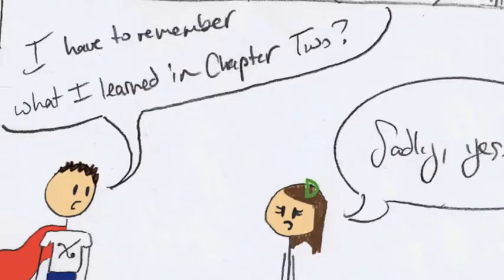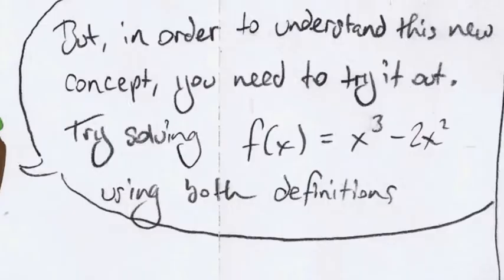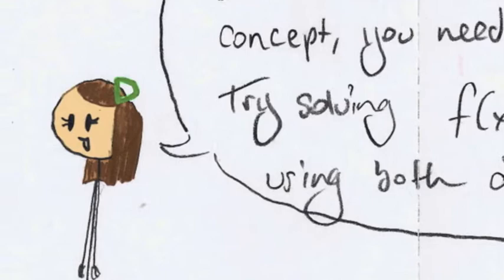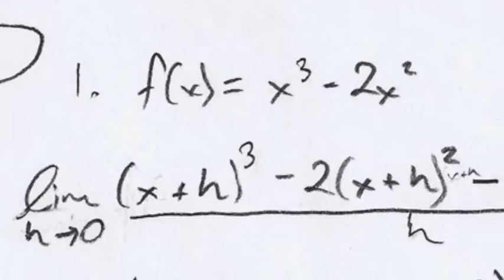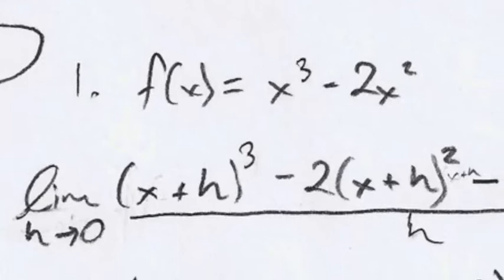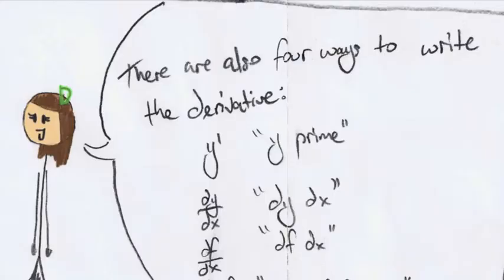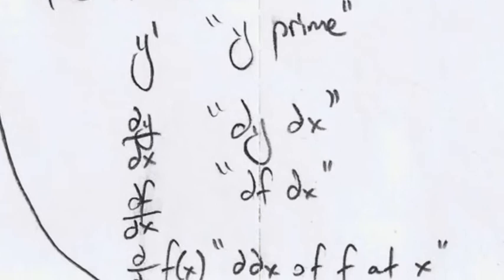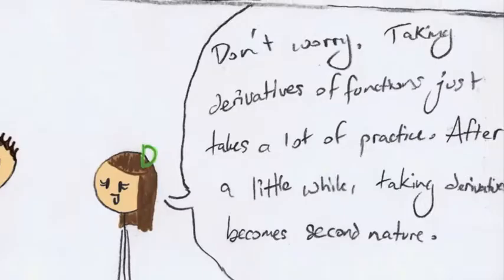I have to remember what I learned in chapter 2? Sadly, yes. But in order to understand this new concept, you need to try it out. Try solving f of x equals x cubed minus 2x squared using both definitions. Hmm. It's 3x squared minus 4x. There are also four ways to write the derivative. y prime, dy over dx, df over dx, d over dx of f at x. Don't worry, taking derivatives of functions just takes a lot of practice. After a little while, taking derivatives becomes second nature.